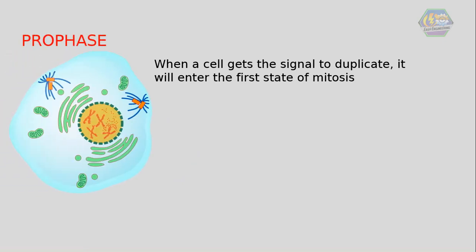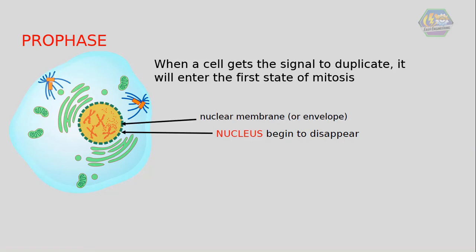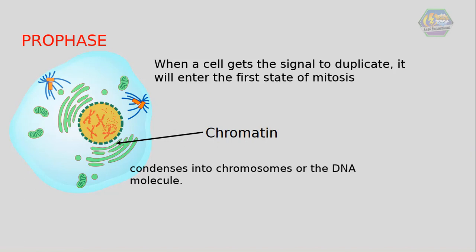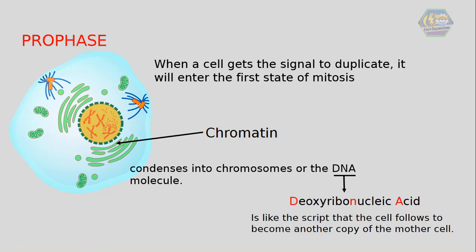When a cell gets the signal to duplicate, it will enter the first stage of mitosis called prophase. Prophase is like a sorting out of the copies — it is when structures in the cell's nucleus begin to disappear, including the nuclear membrane, nucleoplasm, and nucleoli. Then a substance called chromatin condenses into chromosomes, or the DNA molecule. DNA stands for deoxyribonucleic acid, and it's like the script that the cell follows to become another copy of the mother cell.